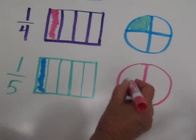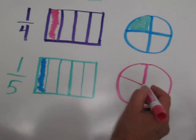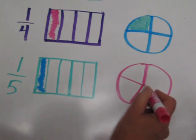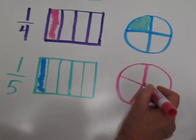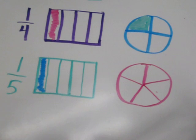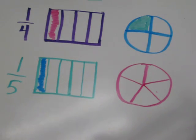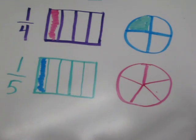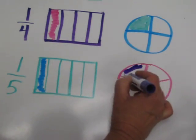One, two, three, four, five. Not exact, but not bad. One, two, three, four, five parts. And I am going to be coloring in one of the five parts.